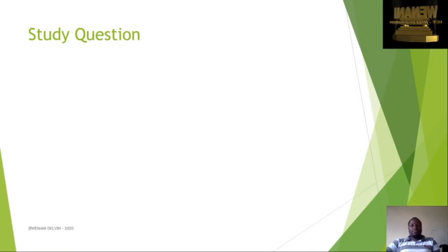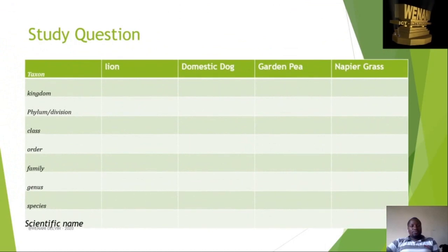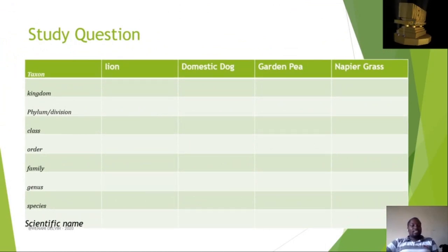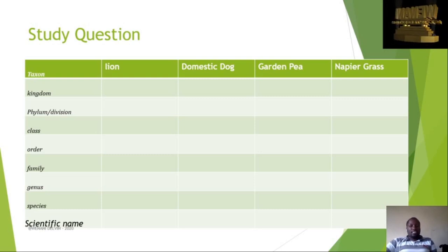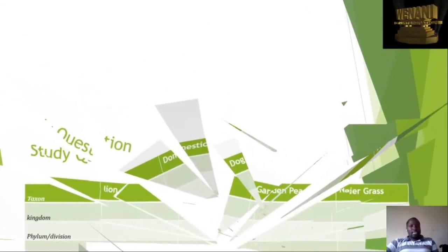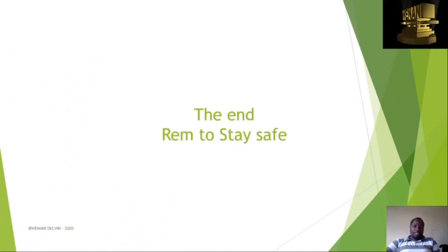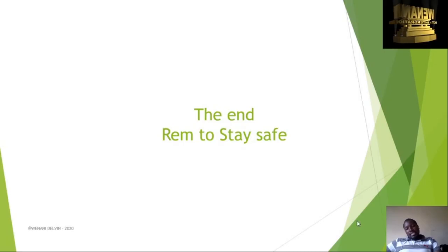I want to give you your question for today. Classify the following organisms: the lion, the domestic dog, garden pea, and napier grass. Thank you very much, have a nice day, and remember to stay safe.